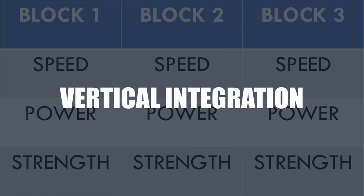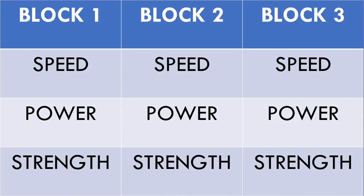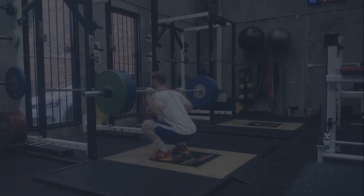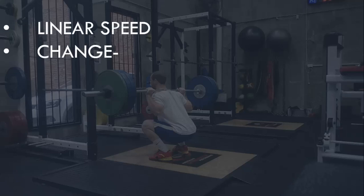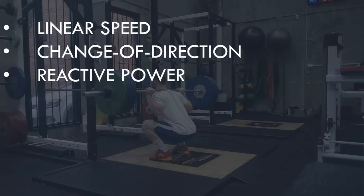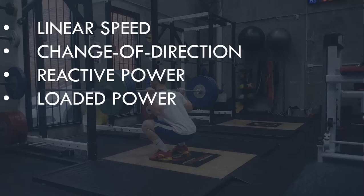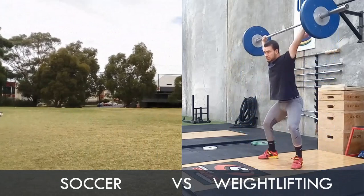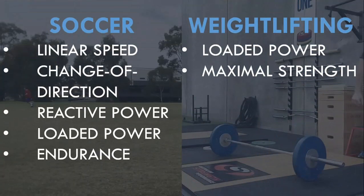Let's now have a look at how the vertical integration method may resolve some of these issues. Essentially, vertical integration is where we train all relevant qualities simultaneously throughout the year, except for active rest periods. There are seven separate qualities of athletic training that can be trained at a given time: linear speed, change of direction ability, reactive power, loaded power, maximal strength, hypertrophy, and endurance or conditioning.